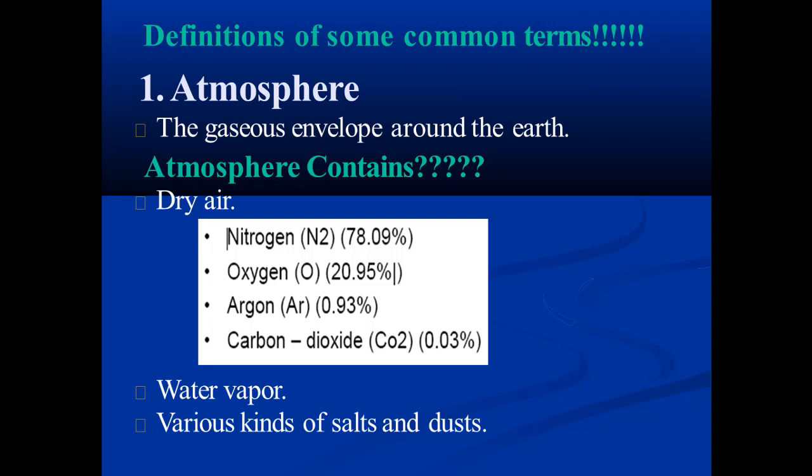The first term is the atmosphere. The atmosphere is the gaseous envelope around the earth — the whole gaseous layer above the earth's surface. Our atmosphere contains dry air, water vapors, and various kinds of salts and dust. The dry air contains nitrogen about 78.09%, oxygen 20.95%, argon 0.93%, and carbon dioxide 0.03%.